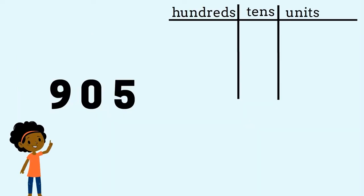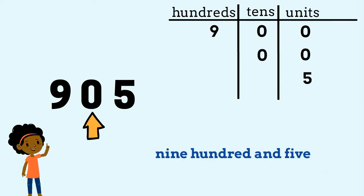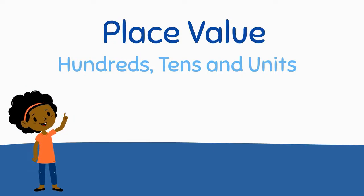Now here's a tricky one. What is the value of zero in the number? What does zero represent? Excellent! Zero represents zero tens, so we have 900, zero tens, and five units: nine hundred and five. Well done!